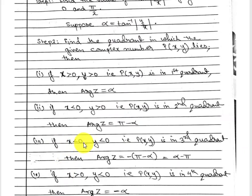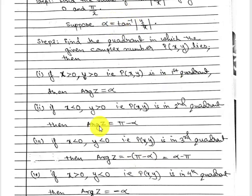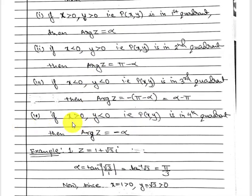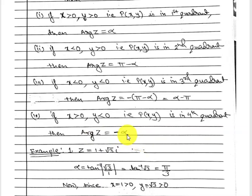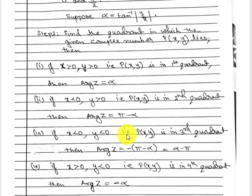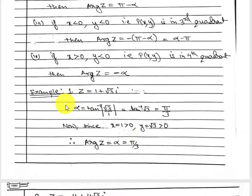If x < 0 and y < 0, the complex number is in the third quadrant and the amplitude equals −(π − α). If x > 0 and y < 0, the complex number is in the fourth quadrant and the amplitude equals −α. These rules will become much clearer once you see the examples.